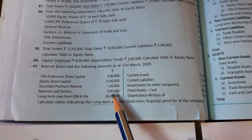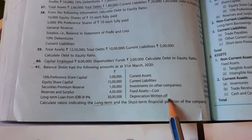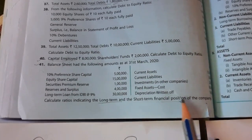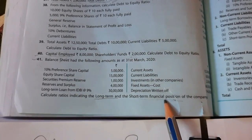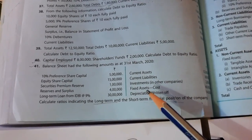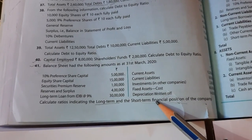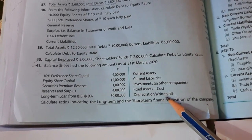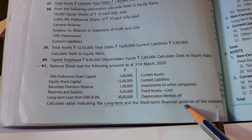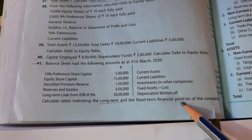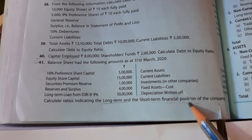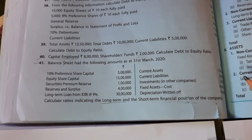Current ratio is found to determine the short-term financial position of the business. For long-term financial position, debt-to-equity ratio is used.